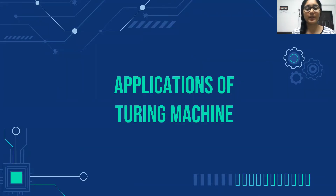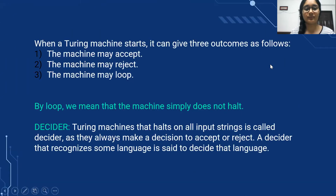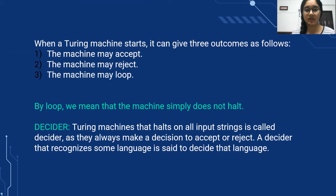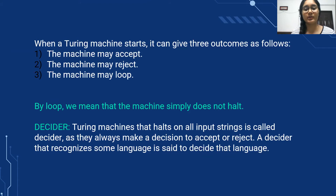Now I'm going to discuss some applications of Turing machine. The applications are based on some of its properties. When a Turing machine starts, the machine may accept, reject, or loop on a given state. By looping, we mean the machine does not stop or halt. A Turing machine that does not halt on all inputs is called a decider, as it always makes a decision to accept or reject. A decider that recognizes some language is said to decide that language.